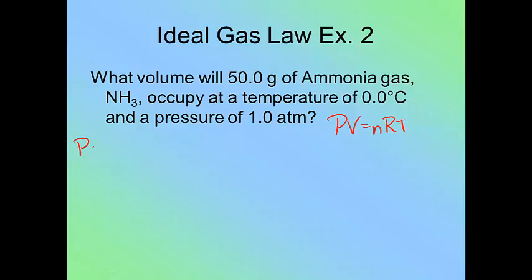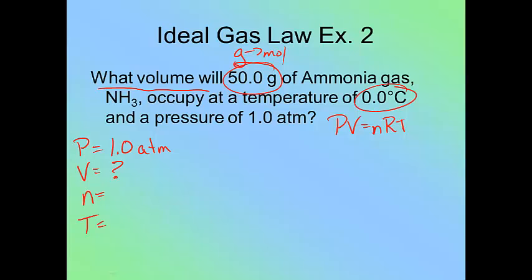I list off what I know. My pressure is 1.0 atmospheres. My volume, it says what volume, so I know I'm solving for volume. My n is going to be converted from this 50 grams here because remember grams is going to get turned into moles. R is a constant, and then I've got my temperature, and my temperature is right here.